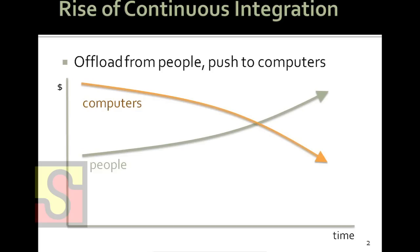The price of computing power is just getting cheaper and cheaper over time, yet the price of people is getting more and more expensive. This economic reality forces us to spend more on computers and less on people, meaning each one of us needs to use a bigger and bigger amount of computational resources efficiently, or we just won't be competitive enough.